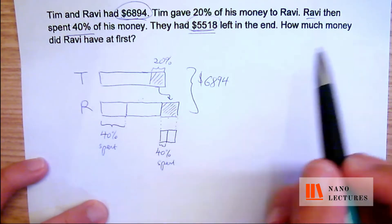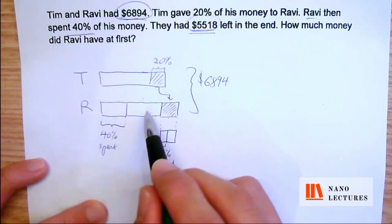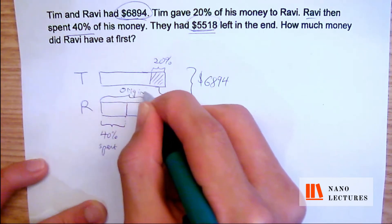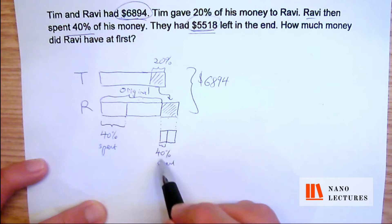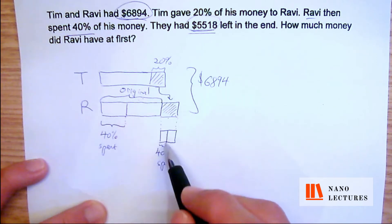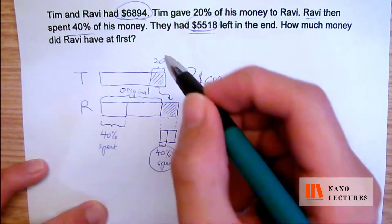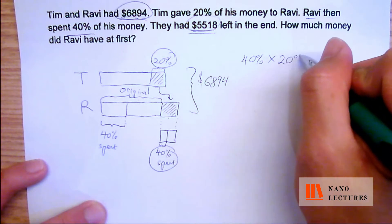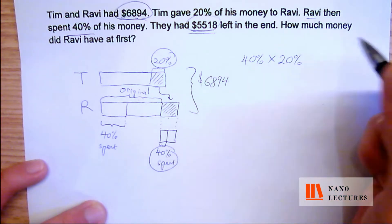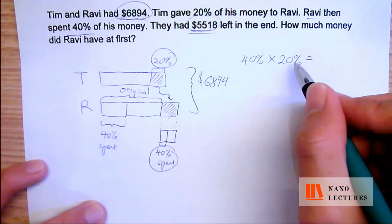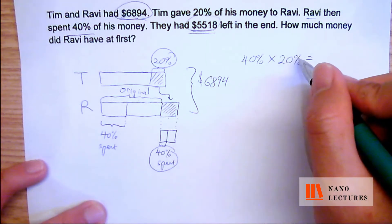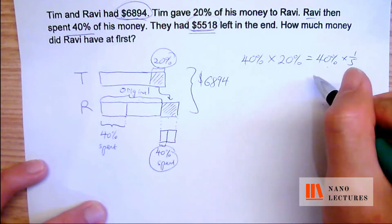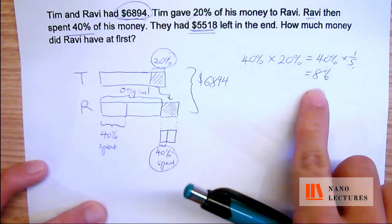Ravi spent 40% of his money: 40% of his original, as well as 40% of what he received from Tim. So right now I'm going to find 40% of the 20% first. 40% multiplied by 20% — 20% is 20 over 100, which is one-fifth. So 40% multiplied by one-fifth is the same as 40% divided by 5, which means this is 8%.